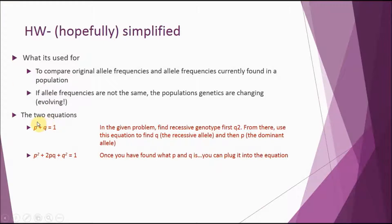There are two equations that help us determine the allele frequency in a population. One of those equations is p plus q equals 1, and the other is p squared plus 2pq plus q squared equals 1. Those are two different equations and they're used for two different things.